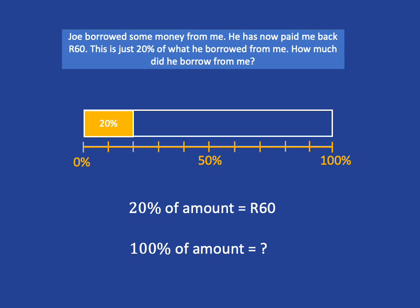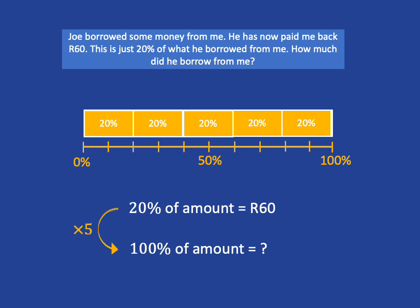We know that 100 divided by 20 is 5, so there are five lots of 20% in 100%. To get from 20% to 100% we multiply by 5. We've been told that 20% is 60 rand, so 100% will be 60 multiplied by 5, which gives us 300. So Joe borrowed 300 rand from me.